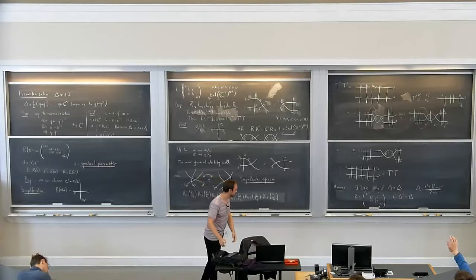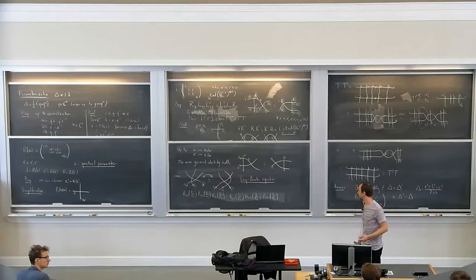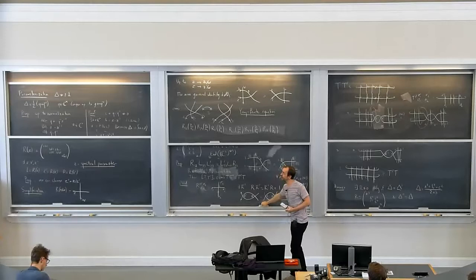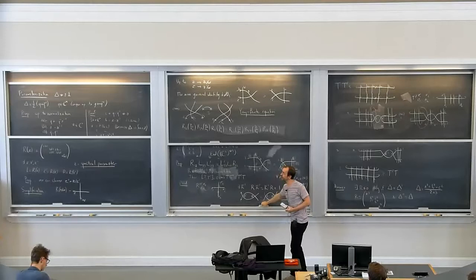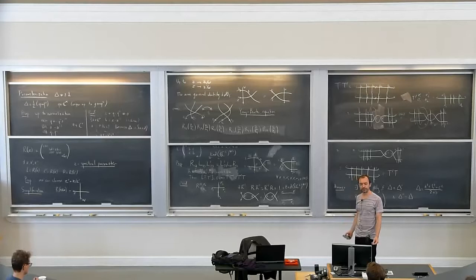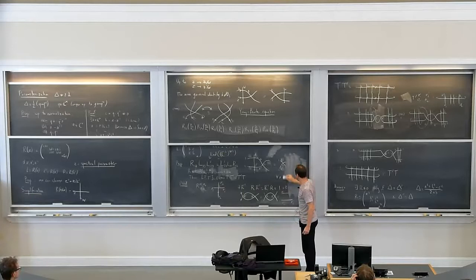Let me do the inversion relation. We want to compute the inverse of R(z). The claim is: if you compute R₁₂(z) · R₂₁(z⁻¹), this equals some scalar factor times the identity of C² ⊗ C². Graphically, R₁₂ means you do a crossing; after the crossing, line two is on the left, so you apply R₂₁, which means R with arguments reversed — and conveniently, that corresponds to z⁻¹. This is saying R is invertible up to this scalar, which is good enough for our purposes.